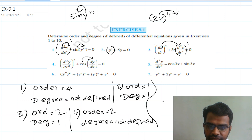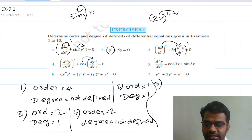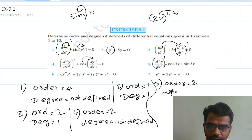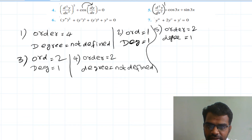Fifth question: d²y/dx² = cos3x + sin3x. Here d²y/dx² — order equal to 2. The highest power value of the highest order derivative is 1, so degree equal to 1.